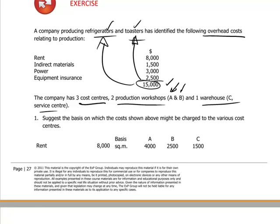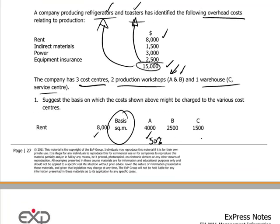Suppose we take the rent cost of $8,000 and split it up between the production workshops and the warehouse based on floor space. The basis here is square meters. Workshop A is occupying 4,000 square meters of the total 8,000 — that's 50%. Workshop B has 2,500 square meters and warehouse C has 1,500 square meters. So production workshop A should be carrying 50% of the rent costs, or $7,500.